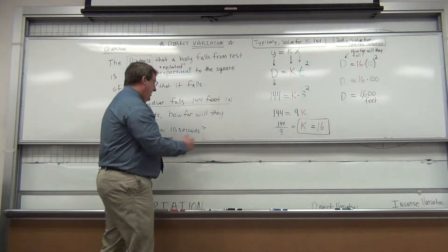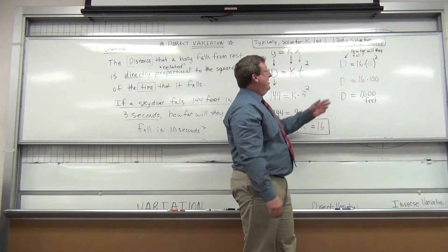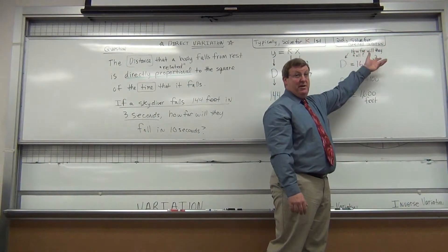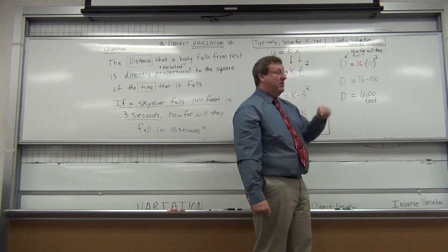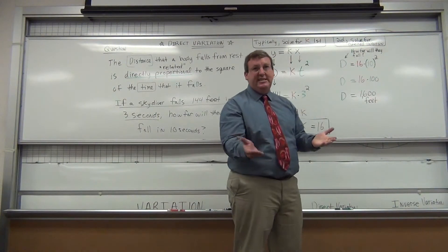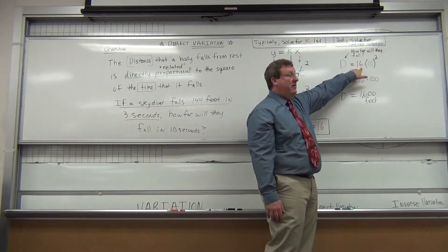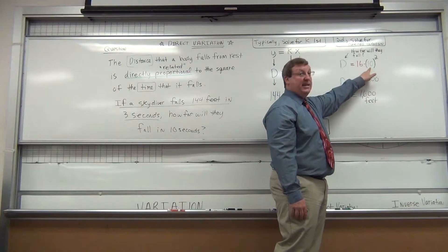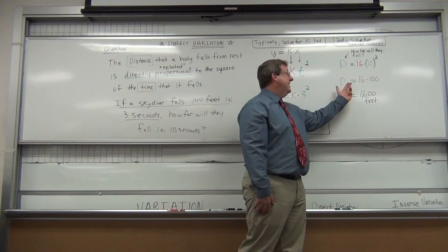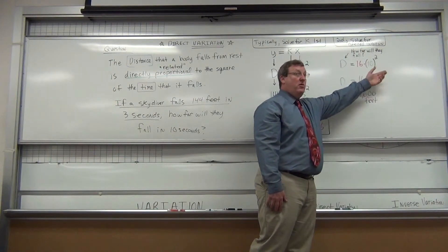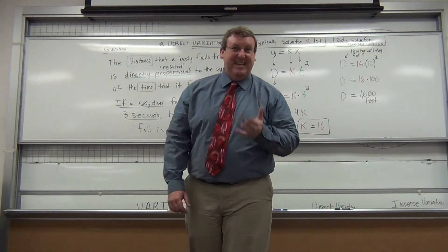How far will they fall in 10 seconds? Let's solve for the desired unknown. Do they tell us how far they will fall? No, that's the distance d, our unknown. Do we know what k is? Yes, it's 16 again, no matter what time we're talking about. So plug in 16 for your k. How long is it falling? 10 seconds, and you square it. Simply, the distance the skydiver falls will be 16 times 10 squared, or 100. The skydiver will fall 1,600 feet in 10 seconds.